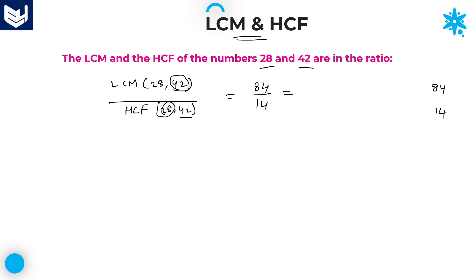Now, LCM is 84 and HCF is 14, so 84 divided by 14 gives 6. Therefore, the required ratio between these two is 6 is to 1. LCM and HCF are in the ratio 6:1 for these two numbers. That is the answer.